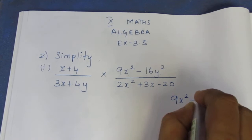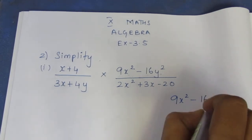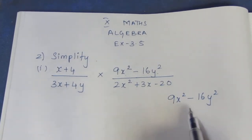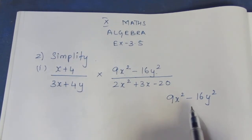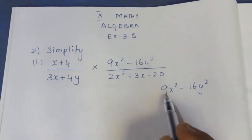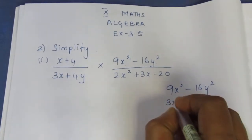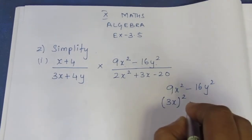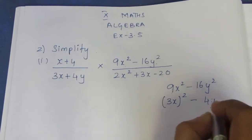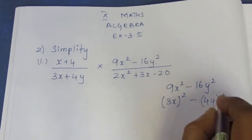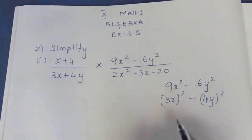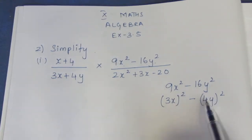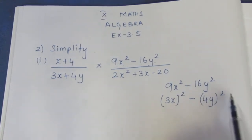9x square minus 16y square — this is in the form of a difference of squares. That is why we write it as (3x) whole square minus (4y) whole square. Since 3 square is 9x square, we apply the a square minus b square formula.